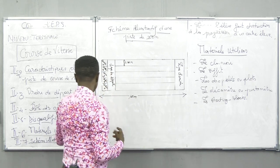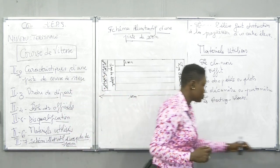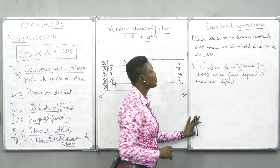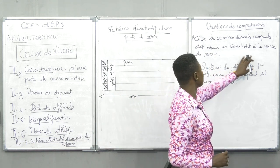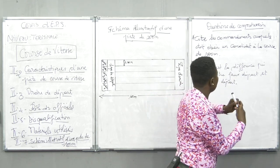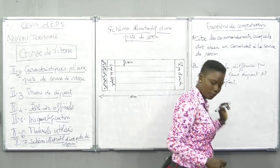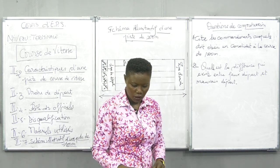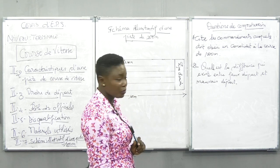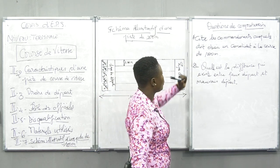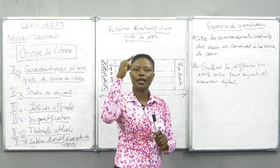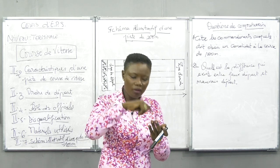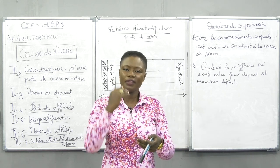Je vais vous poser deux questions par rapport à la leçon de ce jour. Questionnaire de compréhension: première question — citez les commandements auxquels doit obéir un candidat à la course de 100 mètres. Deuxième question — quelle est la différence qui existe entre faux départ et mauvais départ? Les commandements sont à vos marques et prêts. Le T n'est que le signal émis par le claquoir ou le pistolet.